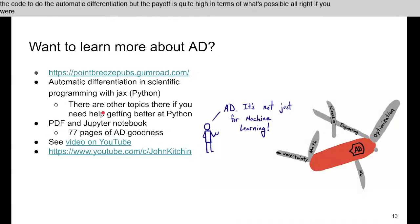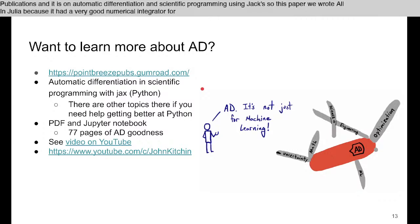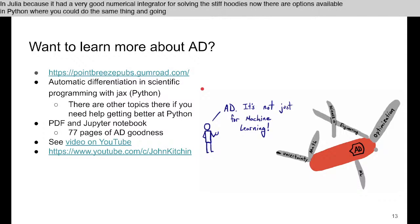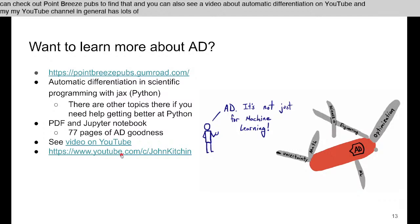If you want to learn more about automatic differentiation, we've written a book here at Point Breeze Publications on automatic differentiation and scientific programming using JAX. This paper we wrote all in Julia because it had a very good numerical integrator for solving the stiff ODEs. Now there are options available in Python where you could do the same thing, and going forward we would probably focus on using Python. You can check out Point Breeze pubs to find that, and you can also see a video about automatic differentiation on YouTube. My YouTube channel in general has lots of Python programming goodness.